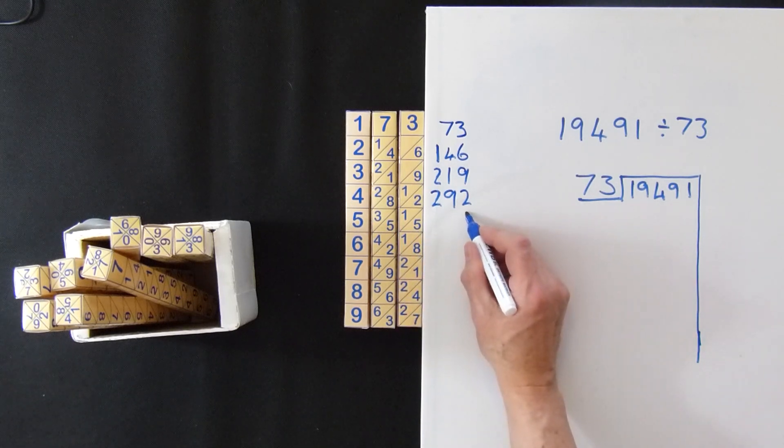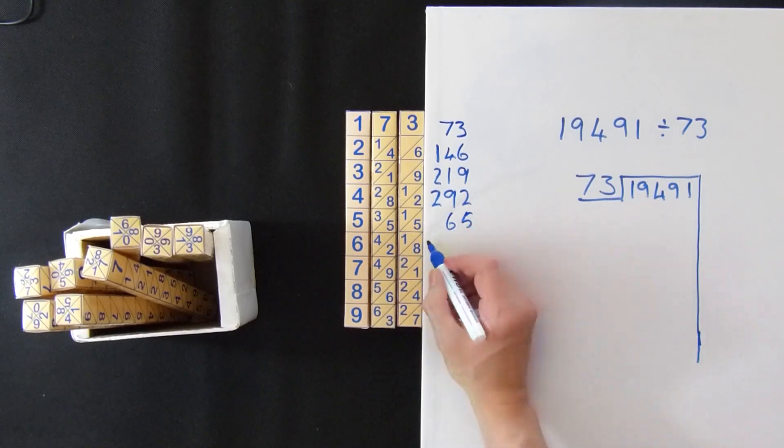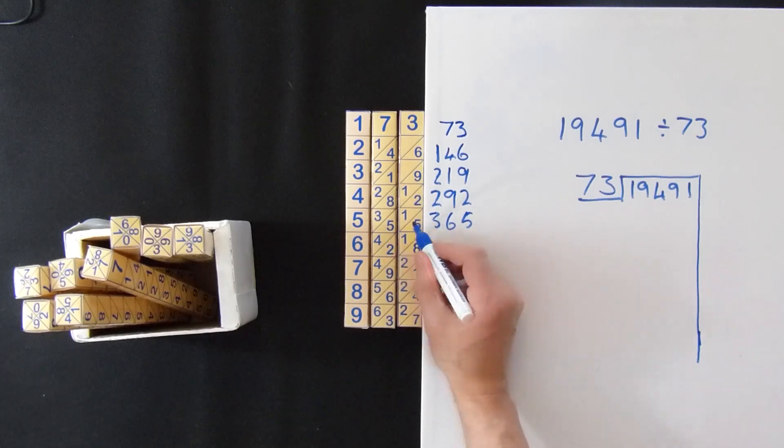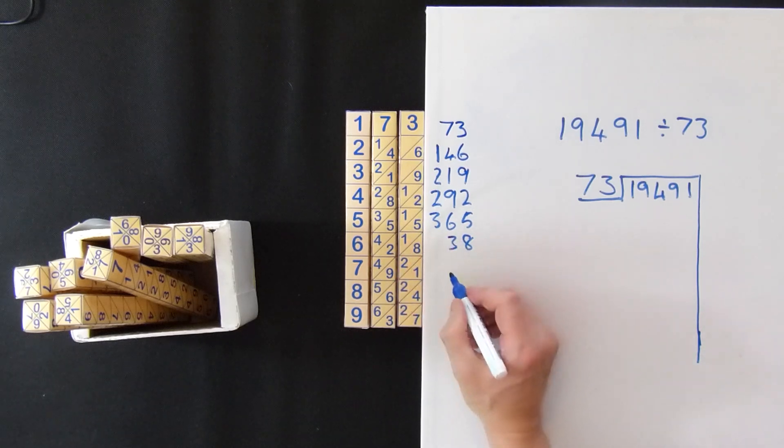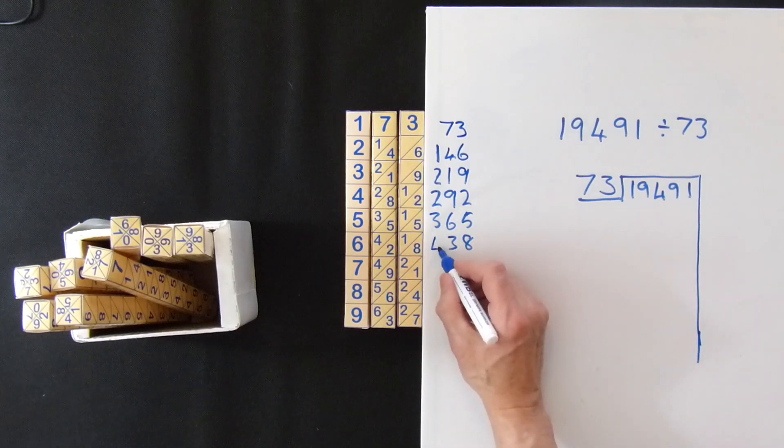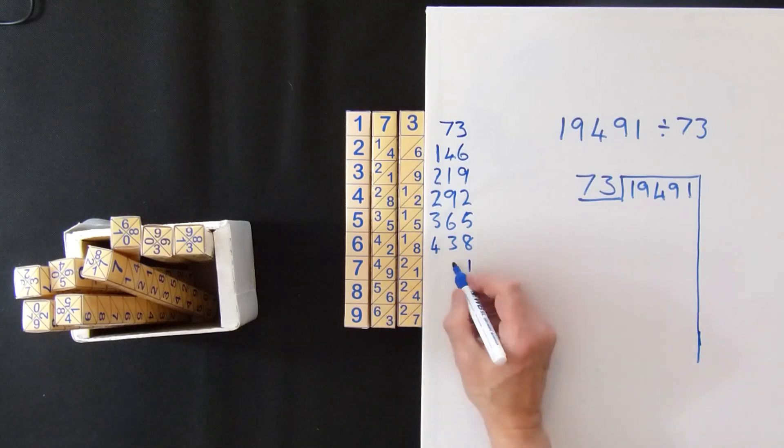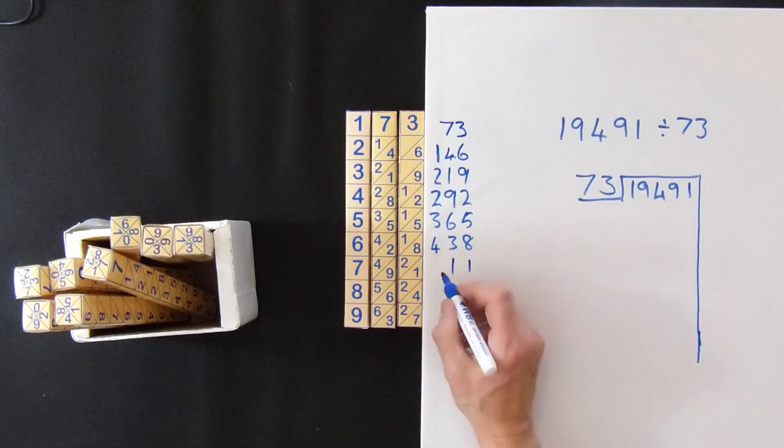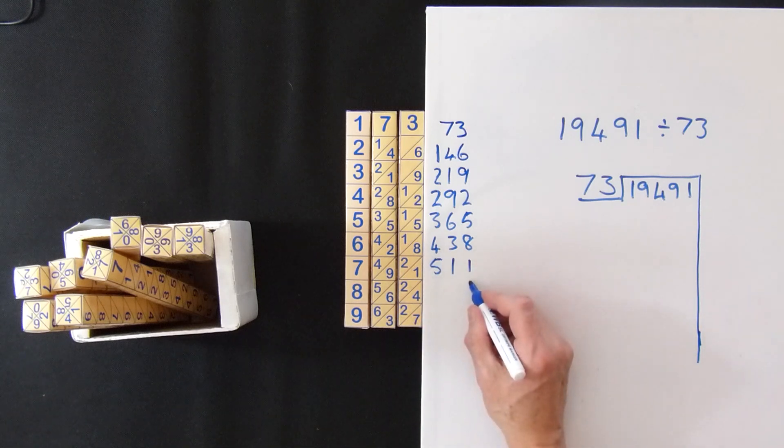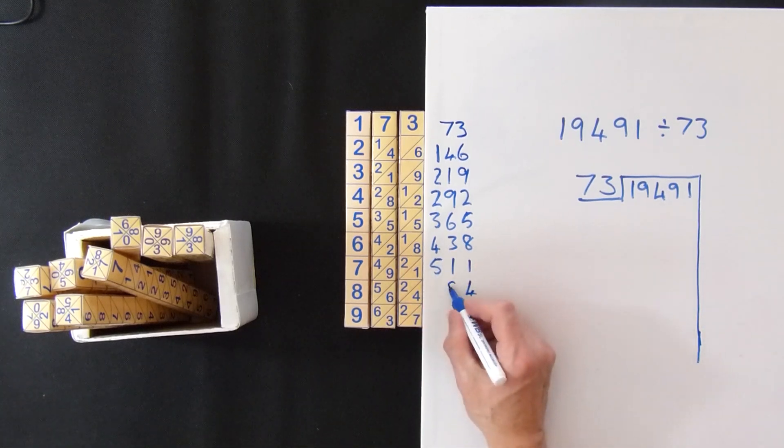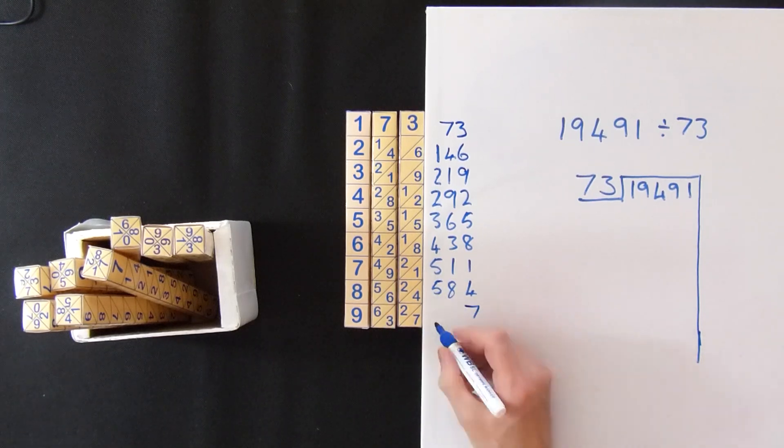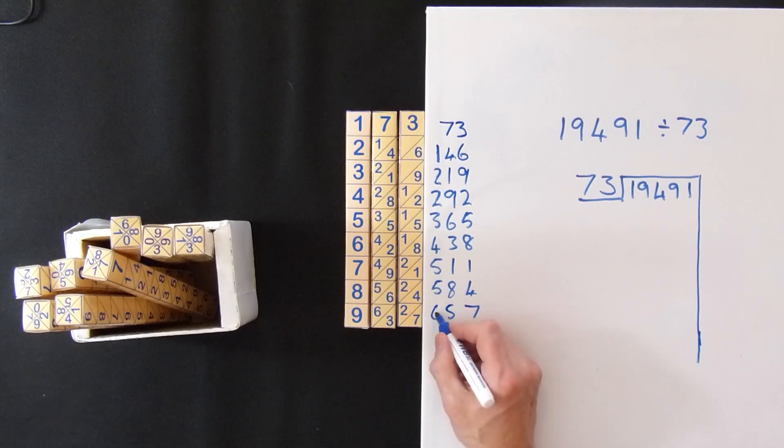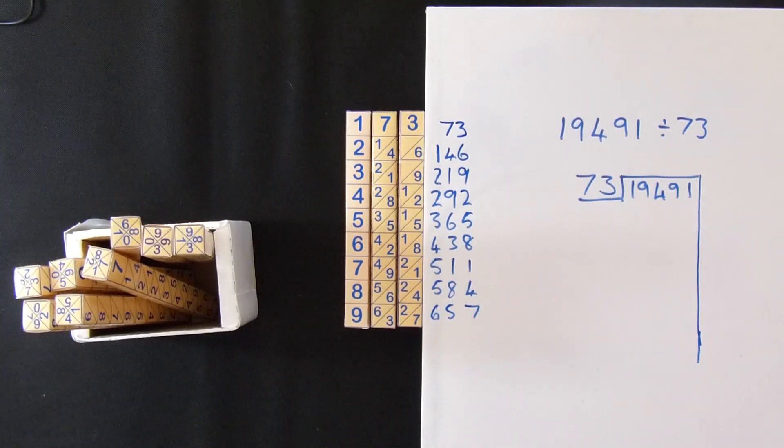5 gives you 365. 6 gives you 438. 7 gives you 511. 8 gives you 584. 9 gives you 657. And that is your 73 times table.